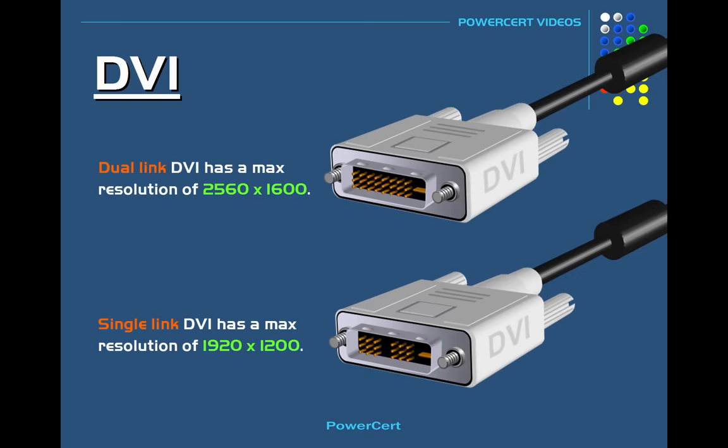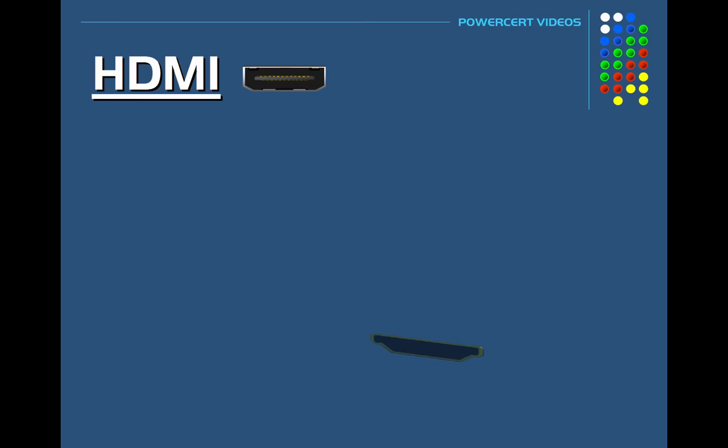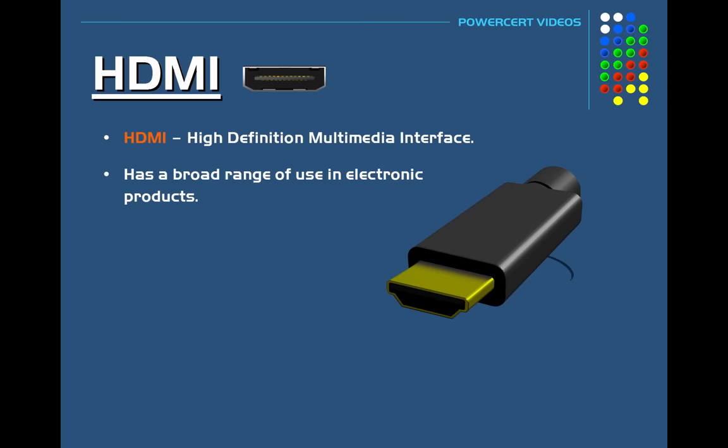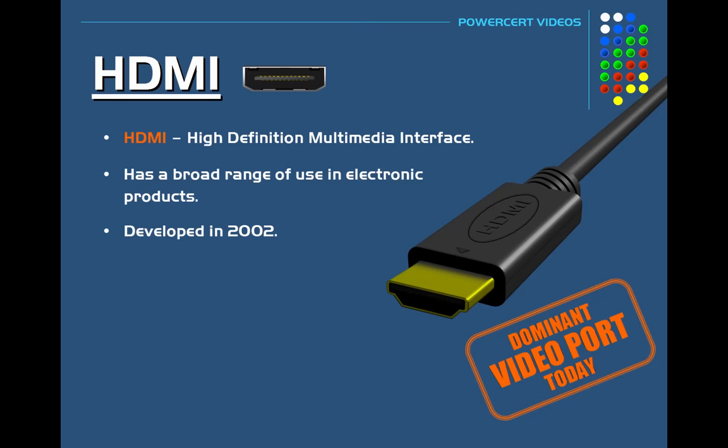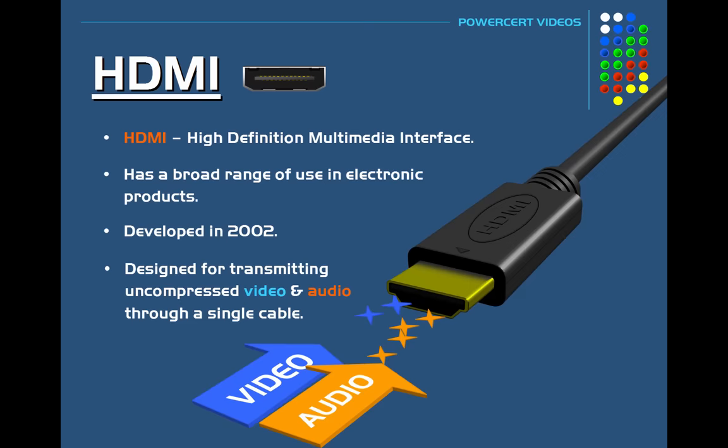Another type of video port is called HDMI, which stands for High Definition Multimedia Interface. HDMI has a broad range of use in electronic products such as TVs, monitors, laptops, mobile devices and so on. It is in fact the dominant video port used today. It was developed in 2002 and it was designed for transmitting uncompressed video and audio digital data through a single cable.